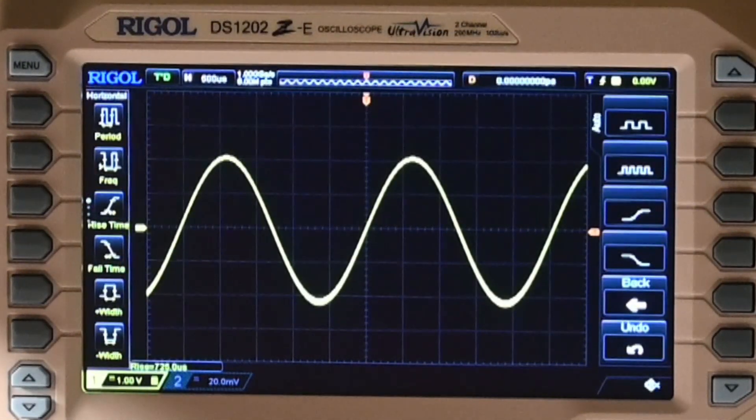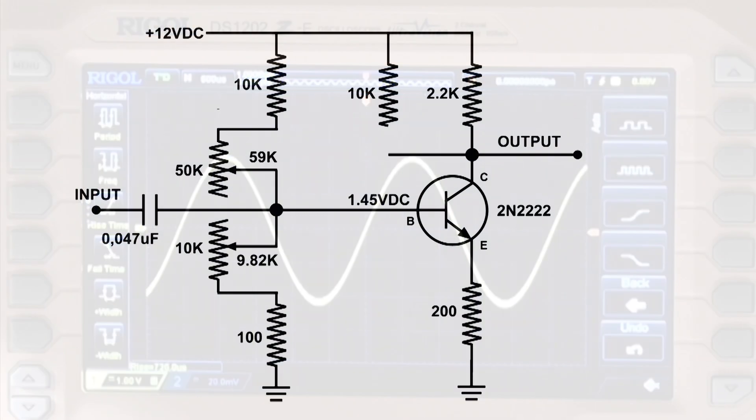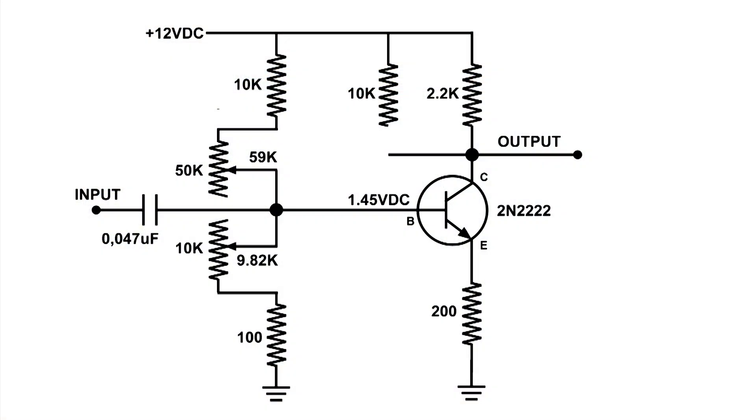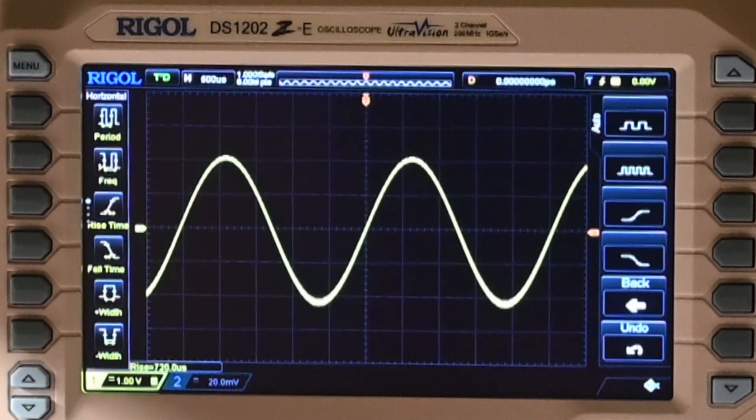I took the measurements. What we had on the voltage on the base was 1.45 volts, the upper resistance was 59k, and the lower resistance was 9.82k. That's with a load on that transistor of 2200 ohms.